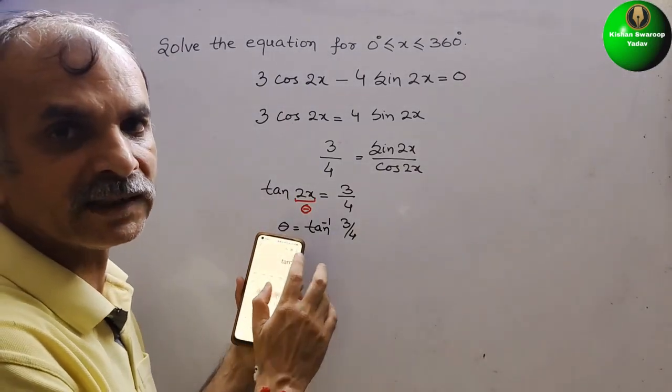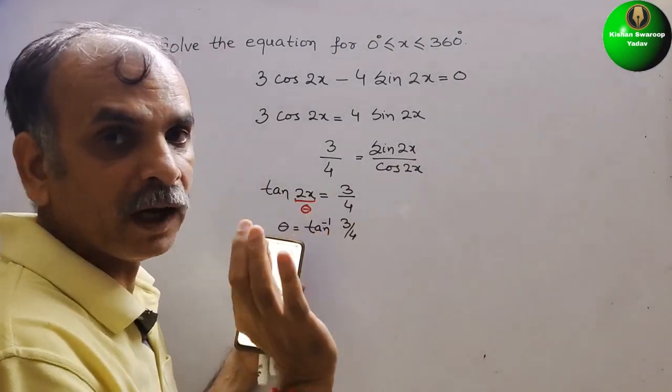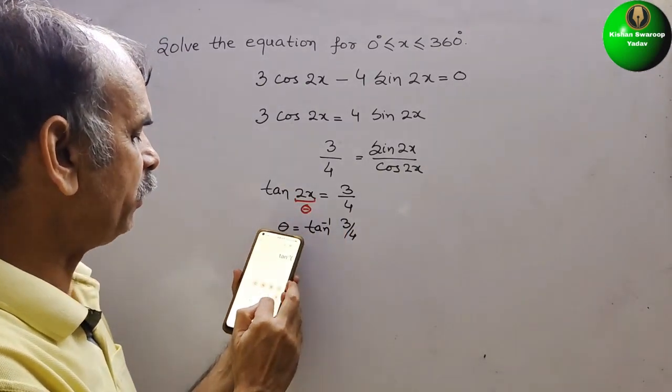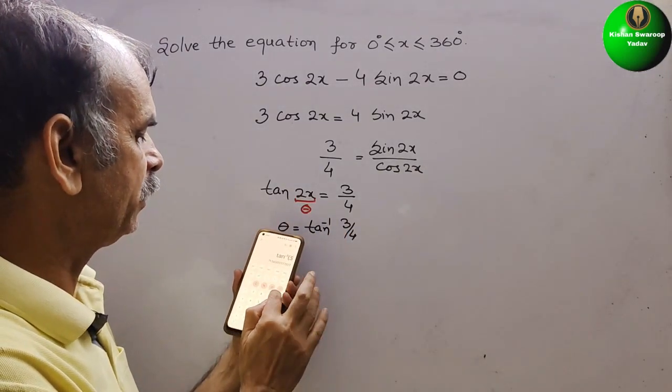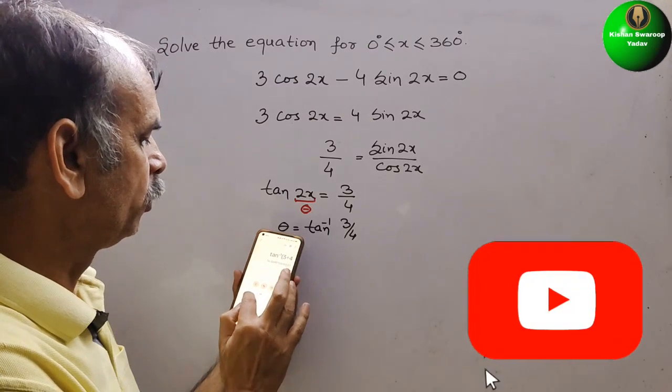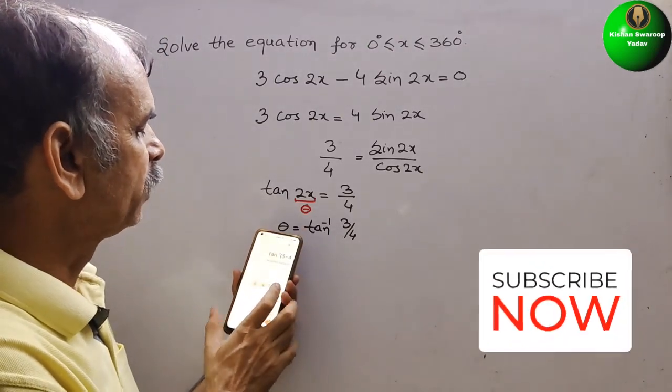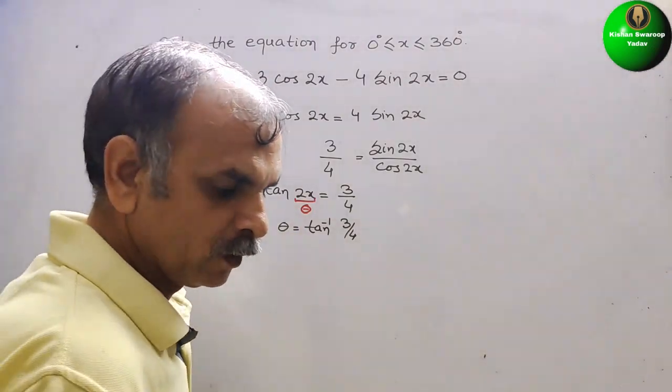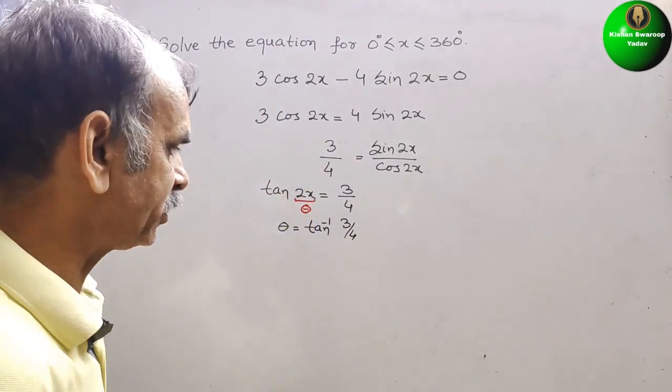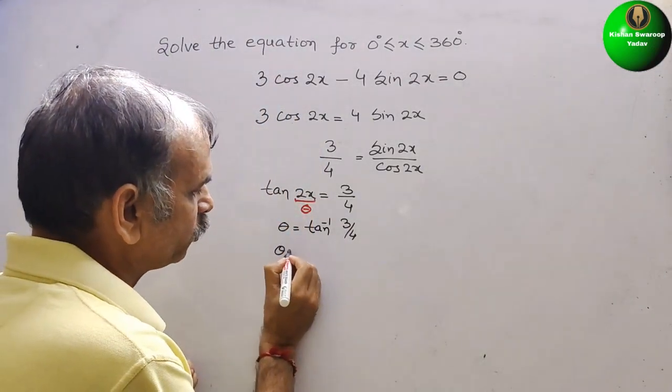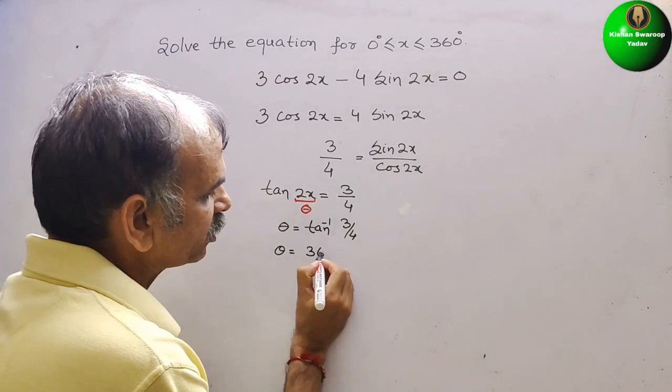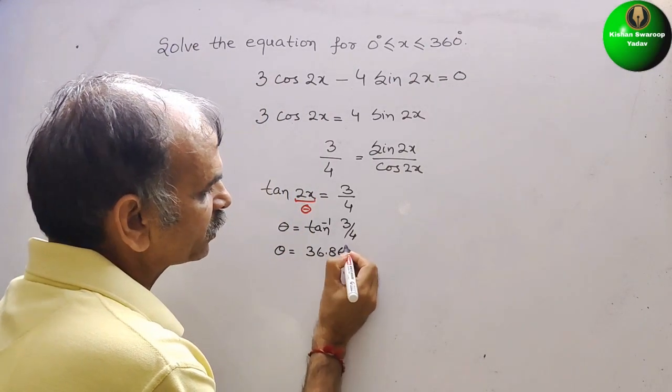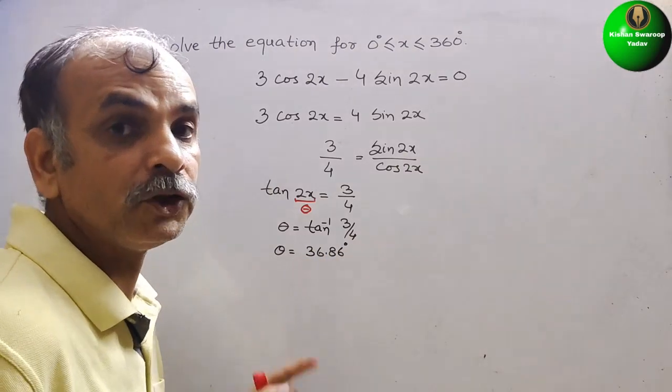Bracket will get open. Just write 3 divided by 4. You will get one value, 36.86. Now theta is equal to 36.86 degree. This is your theta.